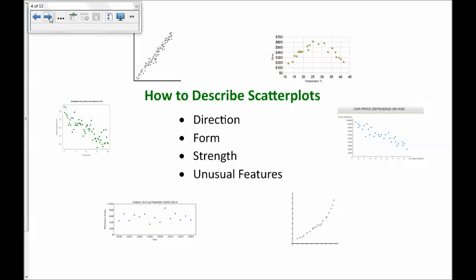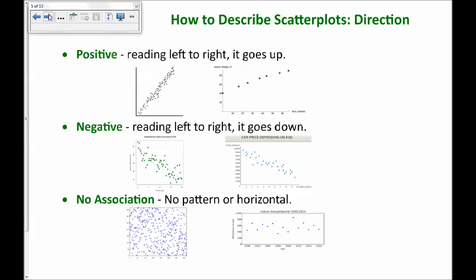So how to describe scatter plots. It's the direction, form, strength, and unusual features. We'll talk about each one of these individually. So first, the direction. It won't surprise you that we call it positive if it goes reading from left to right. It goes up. It has a positive slope. A negative scatter plot reading from left to right goes down, has a negative slope. It's also possible to have no association, meaning there's no pattern to it or it's a horizontal slope.